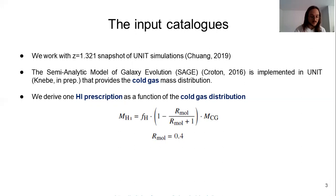And from the cold gas, we can extract the H1 mass using this equation, in which we assume that the molecular to atomic ratio, Rmol, is constant. We have also considered a more complicated expression of this parameter in order to analyze better the H1-halo relation. But our clustering analysis, which is the main point of this paper, will remain unchanged using one expression or the other.